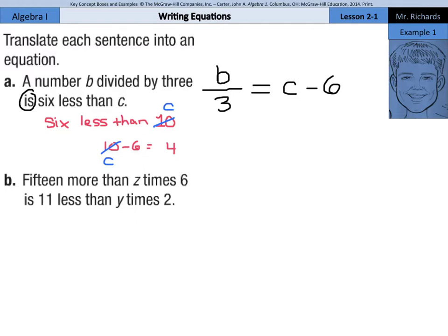What about example 1B? 15 more than Z times 6 is 11 less than Y times 2. Well, let's think about the left side. Now, 15 more than Z times 6. Okay, 15 plus 6Z.